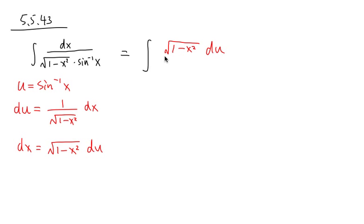and that will be over the denominator, which is square root of 1 minus x squared multiplying by inverse sine x, which is the same as u. So it's multiplied by u. And as you can see, this and that cancels.